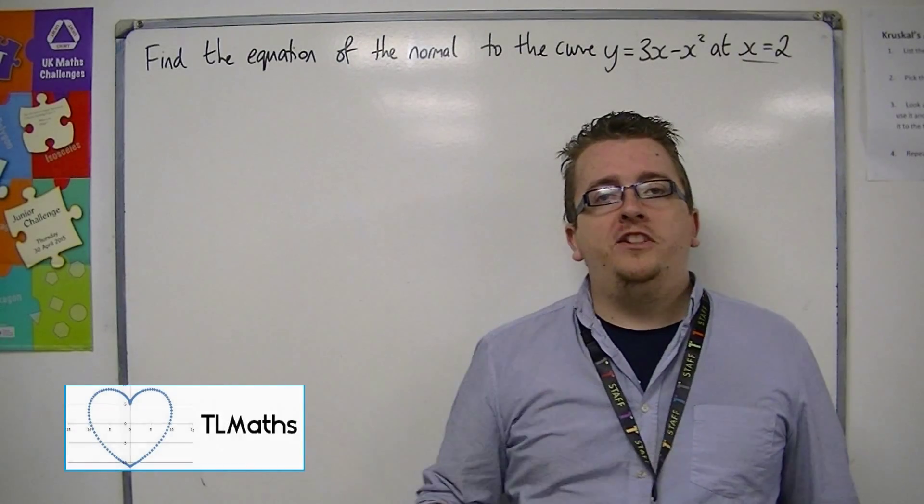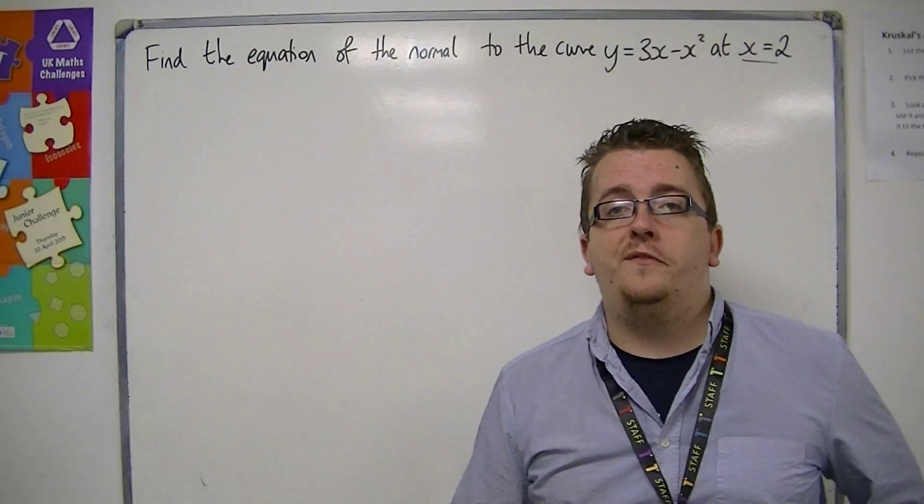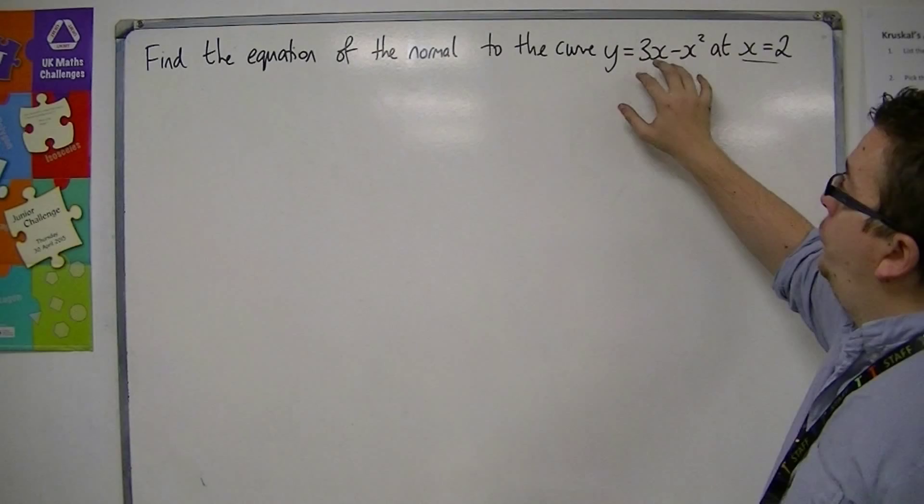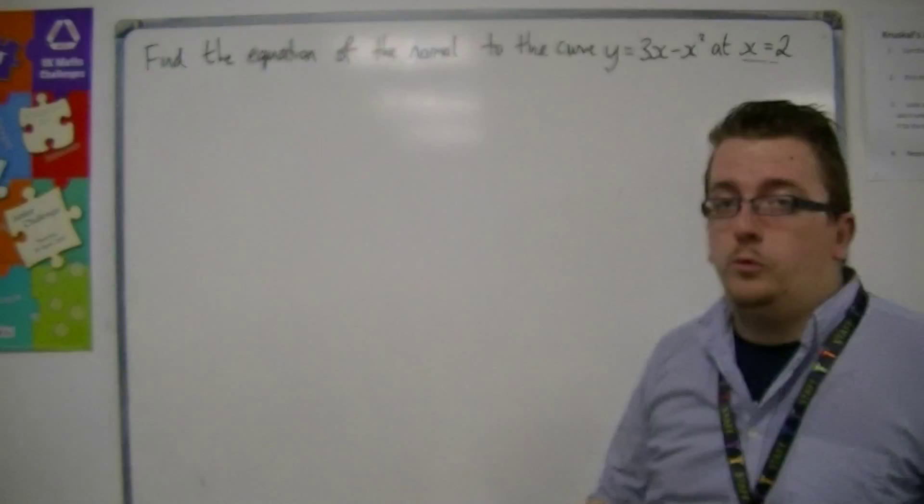In this video, we're going to be looking at how we can find the equation of the normal to a curve at a given point. So the equation that I'm looking at is y equals 3x minus x squared, and I'm looking for the normal at x equals 2.